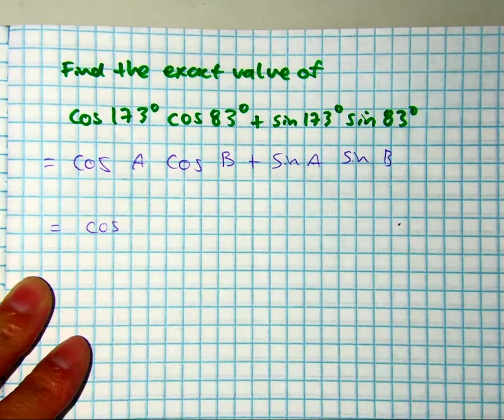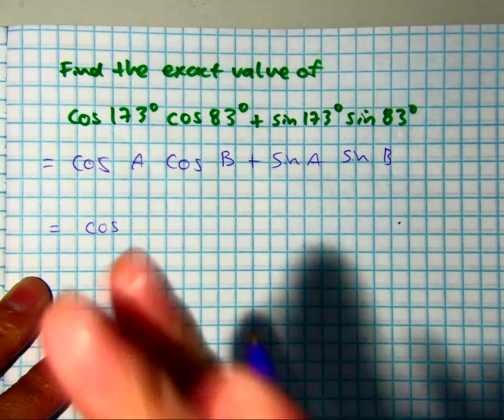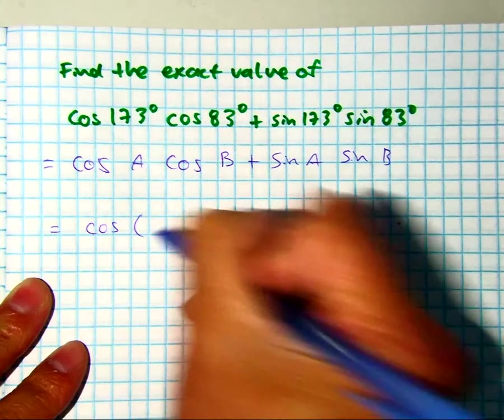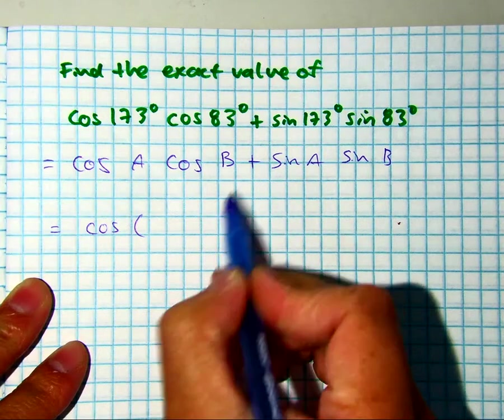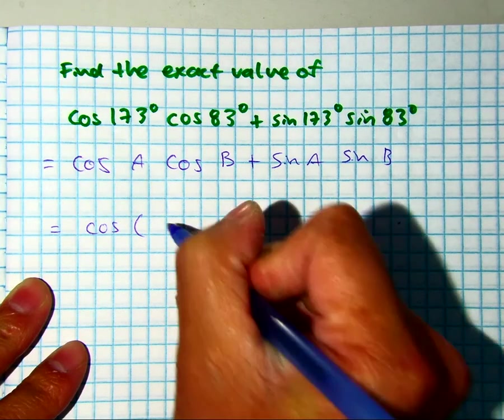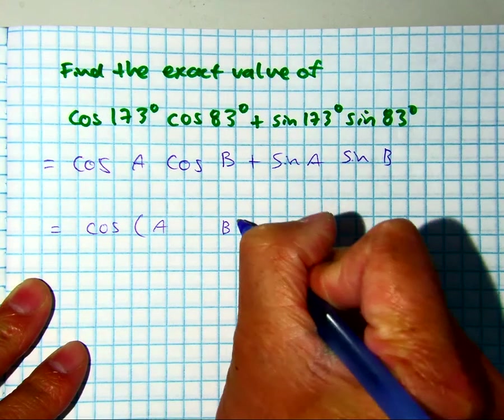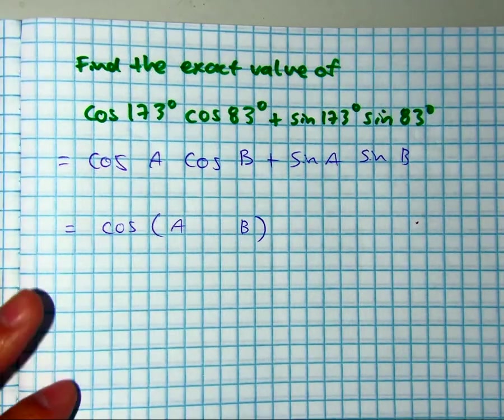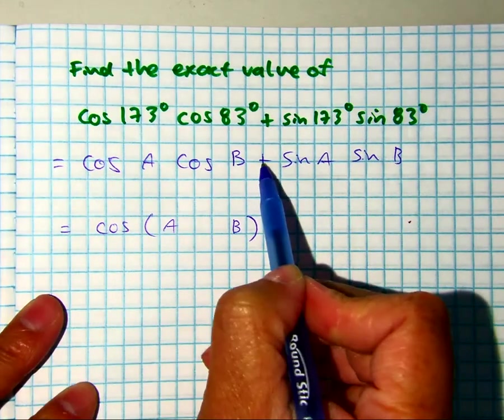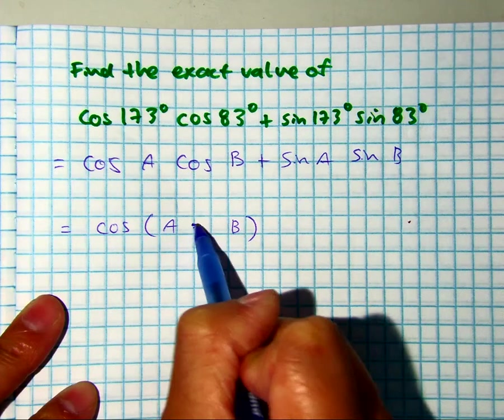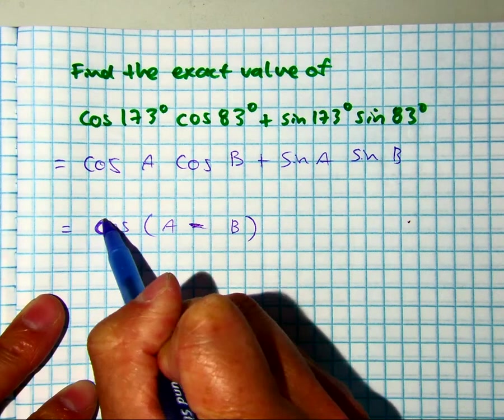I've only taught you so far the sum and difference identity of cosine. In this case, will it be a plus or a minus? Do you see what we're kind of doing? We're working backwards, aren't we? So the plus sign will be a minus, because cosine tells you to change.